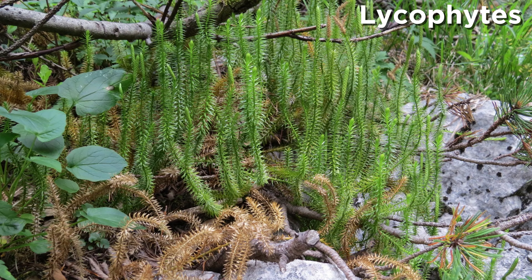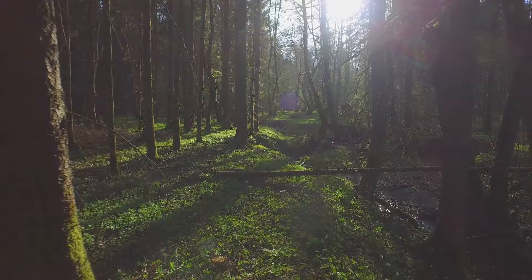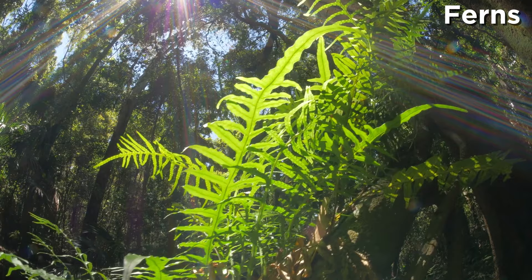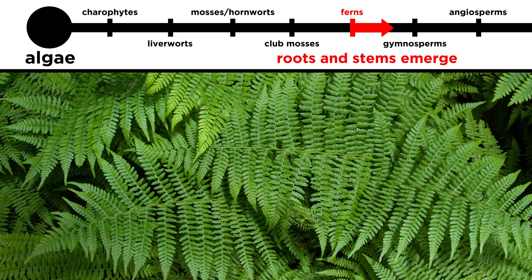In the previous tutorial, we discussed lycophytes, which were the first vascular plants on earth. But these still did not closely resemble the modern plants we are most familiar with, like trees. The next type of vascular plants to evolve were finally of a more familiar form, and those were ferns.